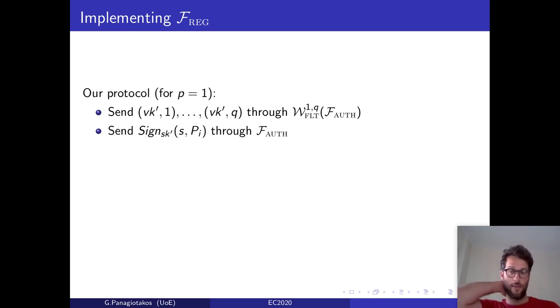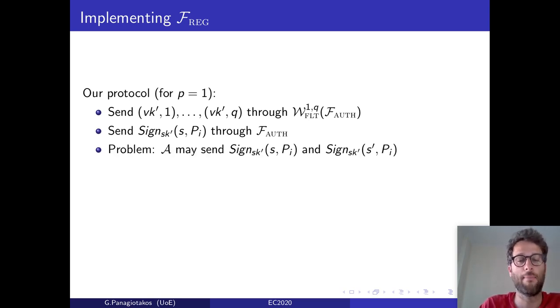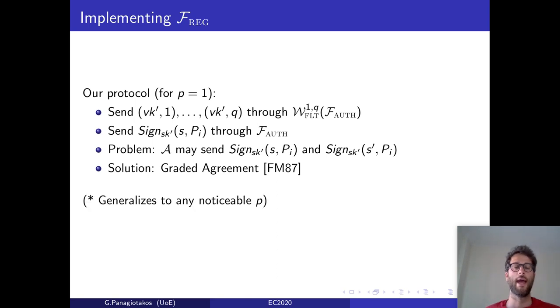Now, if we stopped here, the protocol would not be secure because the adversary can easily break the consistency of this registration functionality as follows. It can, for example, sign with his secret key two strings, S and S', and send it to different parties. Then, these parties would not agree on the string that this party, P_i for example, has registered with the functionality. So, in order to deal with this problem, we use a form of graded agreement, so that parties agree on a common key set. I'm not going to go in more details about this. Next, as before, we can generalize this protocol to any noticeable p by having parties send more messages in a bigger set of rounds that depends on p and q.